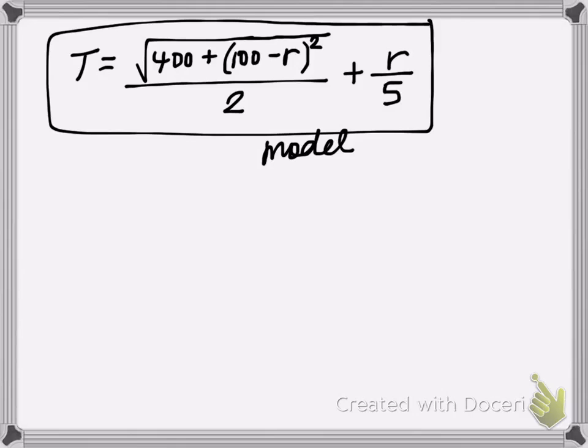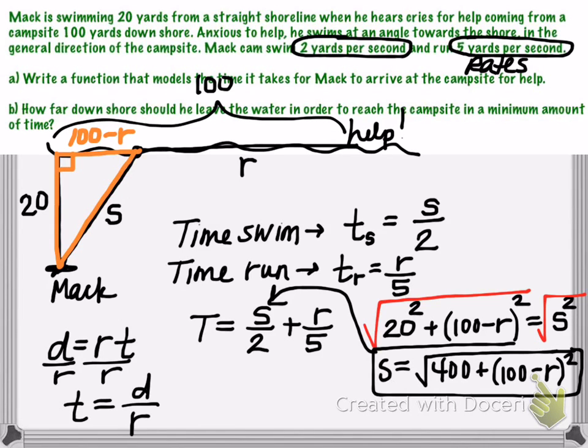This is our function that relates R and T. So remember, R is the distance that he runs and T is our total time. And in fact, if you wanted to use function notation, you could say we've written T as a function of R. This would be T of R, which is the answer to part A. Write a function that models the time it takes for Mac to arrive at the campsite. So we have our function.